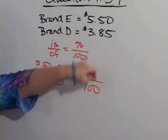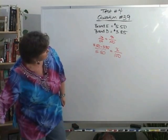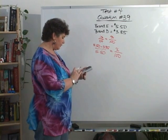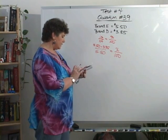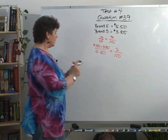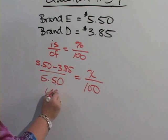We're looking for the percent, so that is our X. So the first thing I want to do is figure out how much money did we save. $5.50 minus $3.85 gives me $1.65.